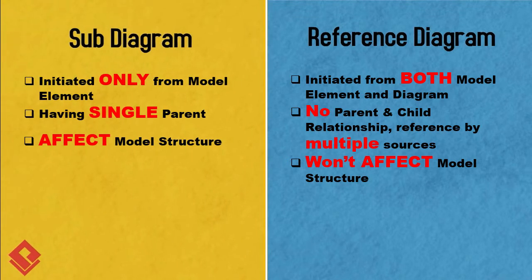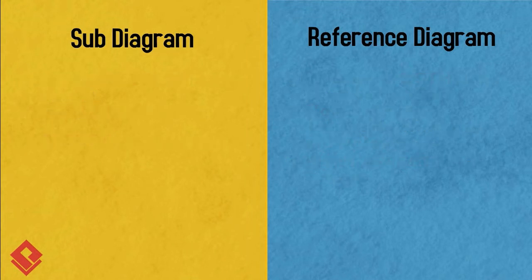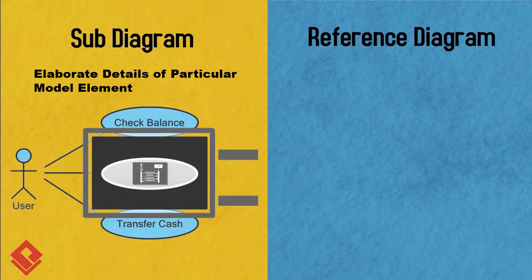Now you know the differences between subdiagram and reference diagram. So when should they be used? The subdiagram gives you a clear scope, not just in the diagram but also in the structure of the model, indicating that the subdiagram and its children are totally owned by the element you are elaborating. Therefore, it is good when you would like to elaborate the details of a particular model element.